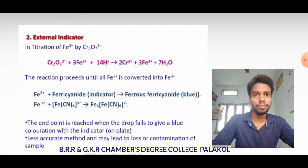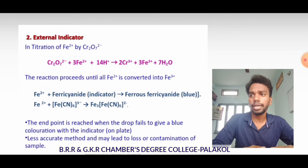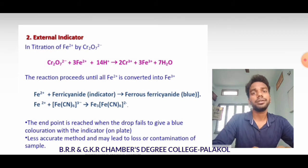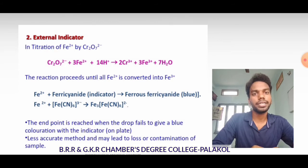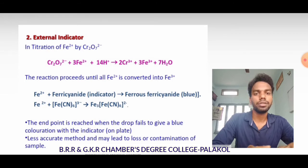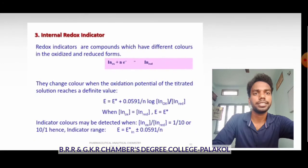For external indicators, example: titration of Fe²⁺ with K₂Cr₂O₇ (potassium dichromate). Completion of the reaction is indicated by a substance outside the reaction mixture — the external indicator. A sample is removed from the flask and tested with ferricyanide, which reacts with Fe²⁺ to form ferrous ferricyanide (blue color). The end point is reached when a drop produces a blue coloration with the indicator. However, this is a less accurate method and may lead to loss or contamination of the sample.